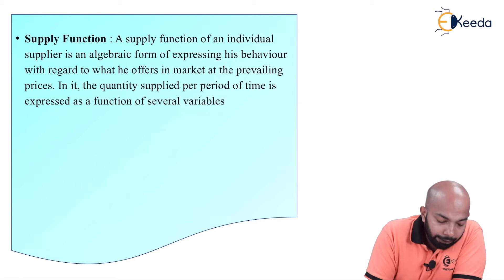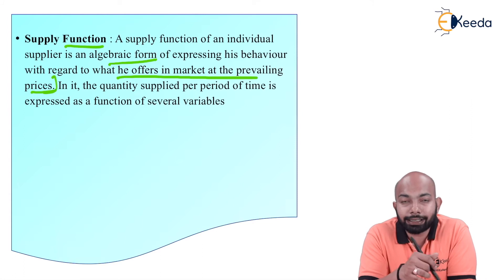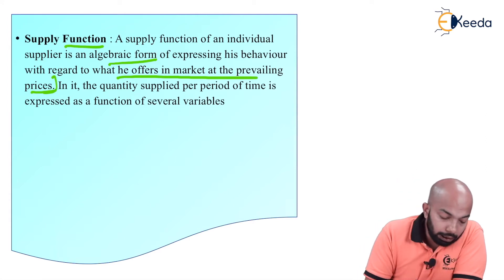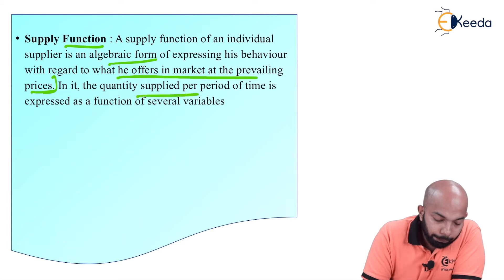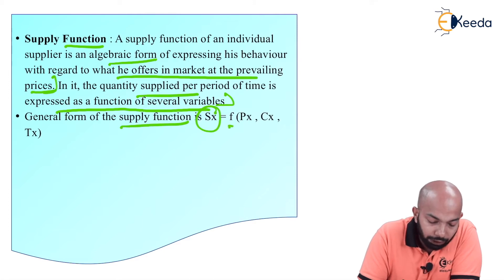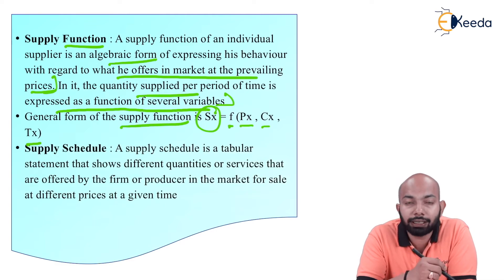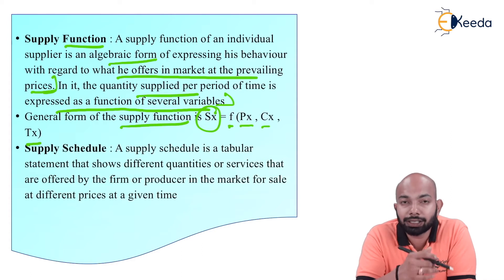A supply function of an individual supplier is an algebraic form of expressing his behavior with regard to what he offers in the market at the prevailing prices. The quantity supplied per period of time is expressed as a function of several variables, and the general form of the supply function is SX = F(PX, CX, TX). This is the algebraic form of the supply function.